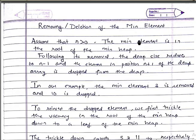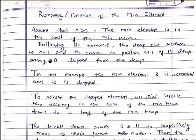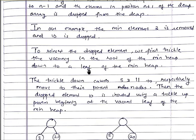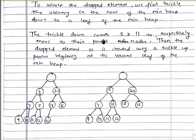Now let's look at removing the min element. Assume n is greater than 0. The min element is in the root of the min-heap. Following its removal, the DEAP size reduces to n−1 and the element in position n+1 of the DEAP array is dropped. To reinsert the dropped element, we first move the vacancy in the root of the min-heap down to a leaf.